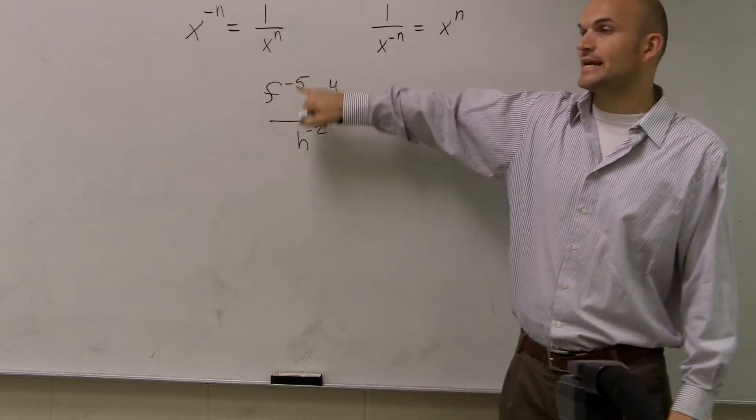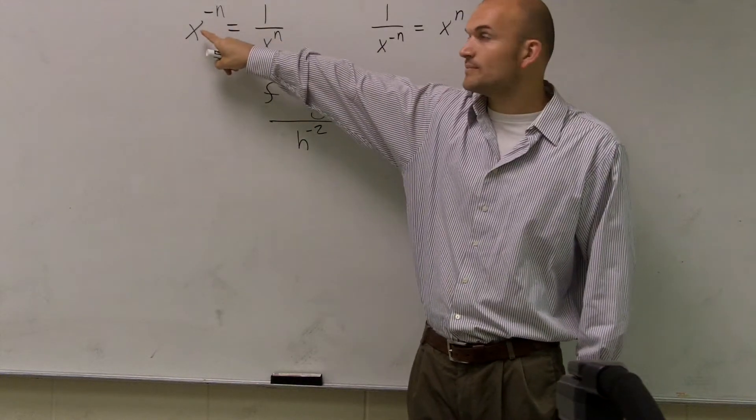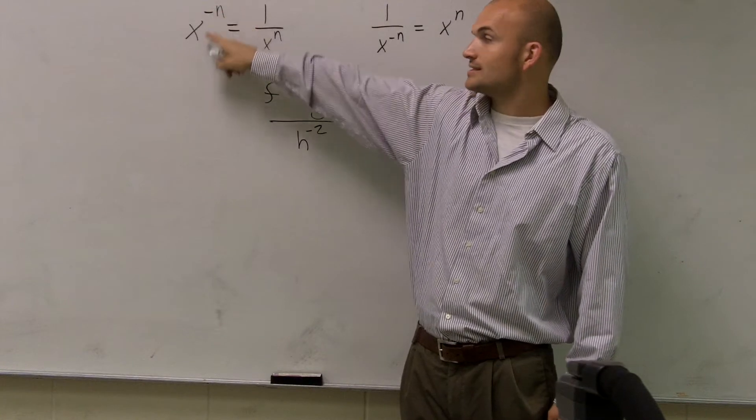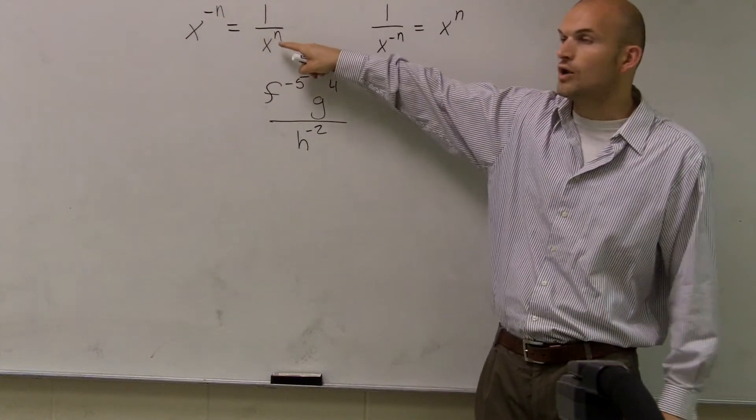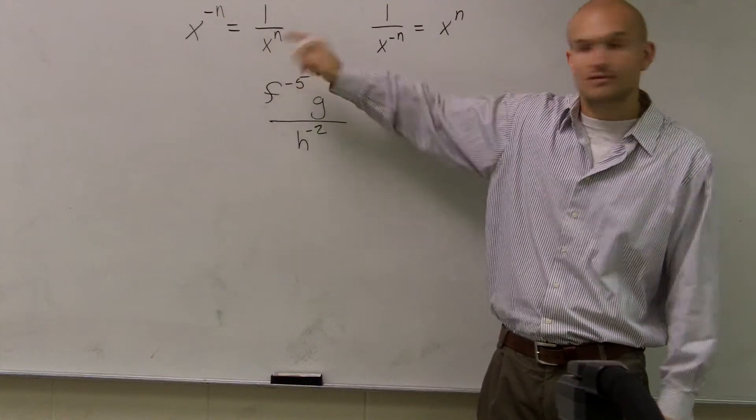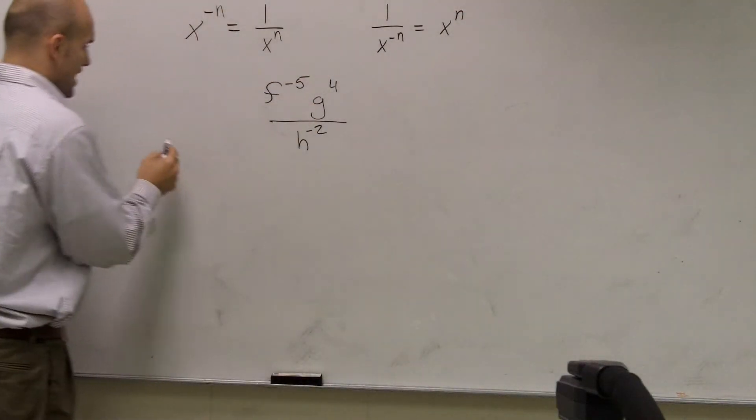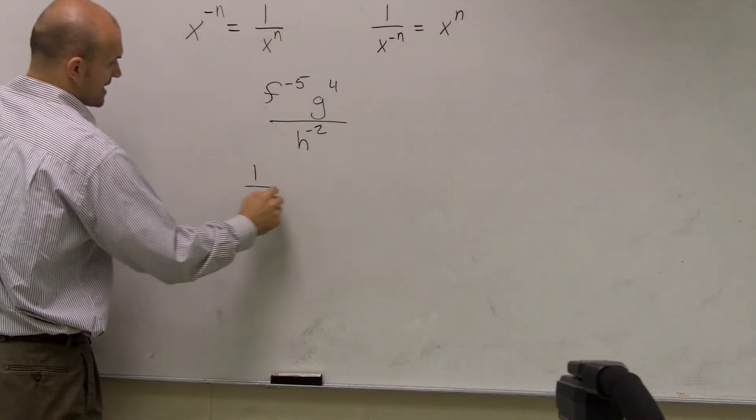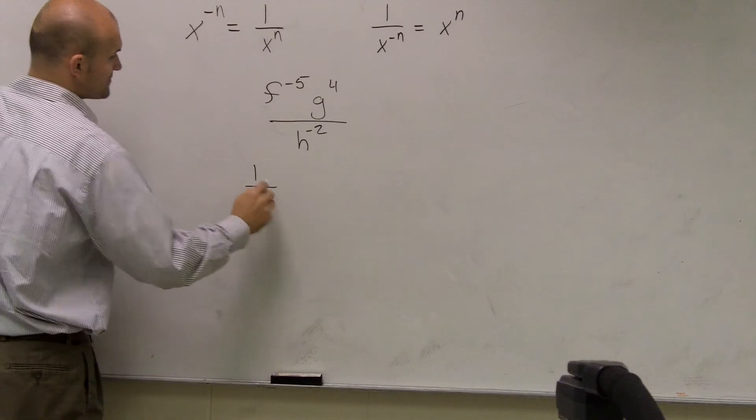So here I have f to a negative fifth. Whenever you have a variable that's negative and it's in the numerator, you can put it under 1 to now make it positive. So what I can rewrite this as now, I can rewrite this as 1 over f to the n.